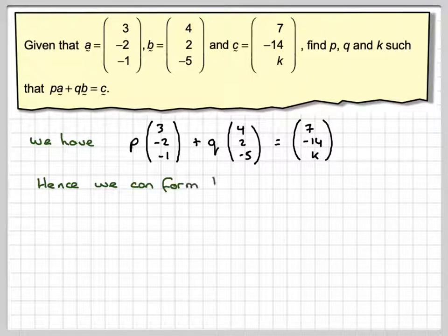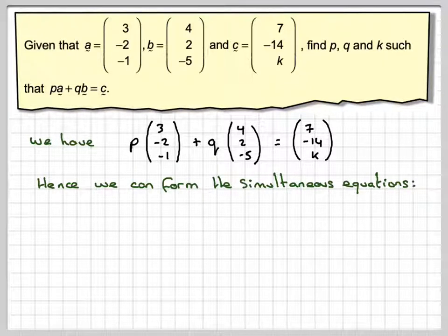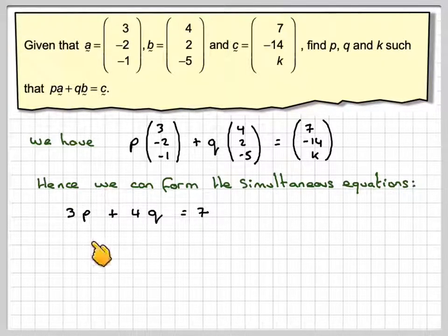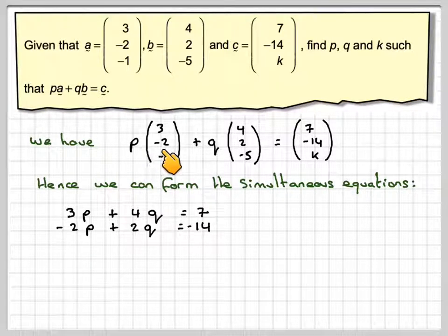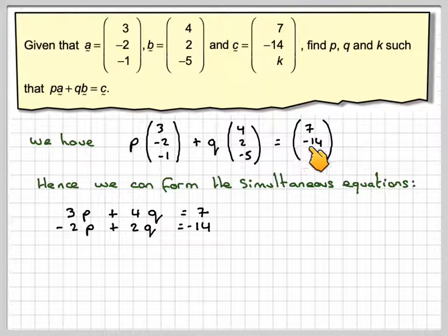And that will set up some simultaneous equations, which we can then solve using algebra. So we've got 3p + 4q = 7 from the x component, and then from the y component, we've got -2p + 2q = -14.